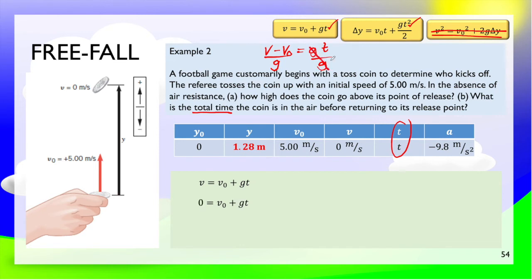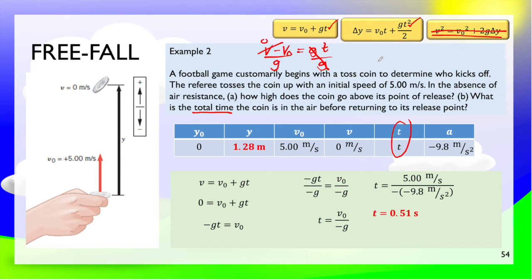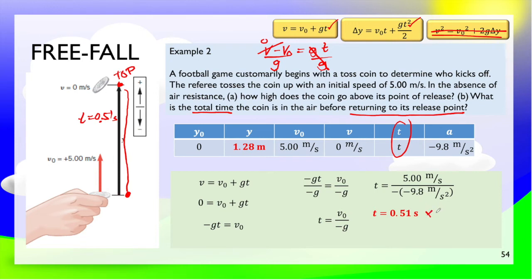Solving this, since v equals 0, substituting the values gives 0.51 seconds. But remember, it asks for the time when the coin returns to its starting point. It takes 0.51 seconds to reach the top. So for the total time returning to the release point, multiply by 2. The final answer is 1.02 seconds.